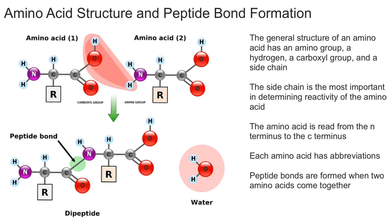Usually when people list a bunch of amino acids they'll use one-letter abbreviations, and each amino acid has its own letter designation. For example, the amino acid alanine is designated by the letter A. This will be more commonly used in your biochem classes, and we'll go over each amino acid abbreviation with tips and tricks for remembering them in future videos.